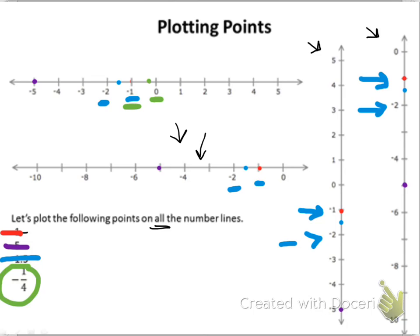On the next number line, negative 1 fourth is again between 0 and negative 1 — a quarter of the way. So 1 quarter of the way would be about right there. Or if you divided it into 4 sections, this would be the first of the 4 sections. On the third example, we have 0 here and negative 1 here, so negative 1 quarter would have to be about right there. My 0 is here, my negative 1 is here, so negative 1 quarter would be about right there. And that's it for negative 1 quarter — it looked complicated, but hopefully you could see it was a lot simpler than you thought.